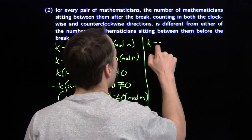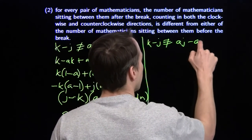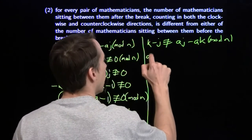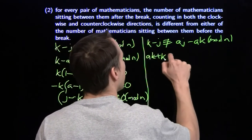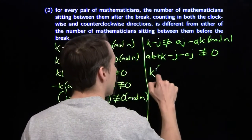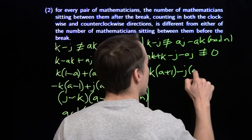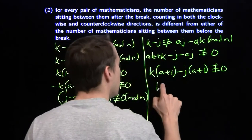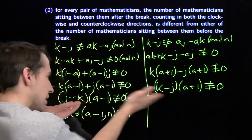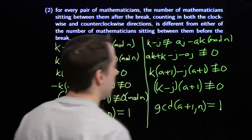This is almost exactly the same condition we saw before. We get that the greatest common divisor of (a minus 1) and n is 1. And figuring the other direction — k minus j can't be congruent to aj minus ak — gives us ak plus k minus j minus aj, can't be congruent to 0. Factoring: (k minus j) times (a plus 1), can't be congruent to 0. So the greatest common divisor of (a plus 1) and n is also 1.